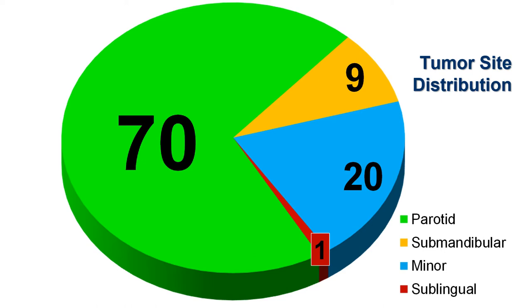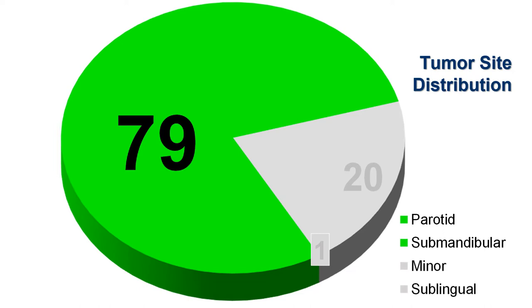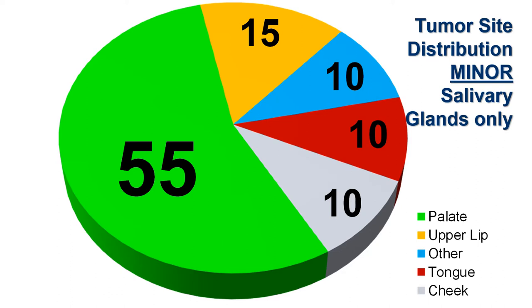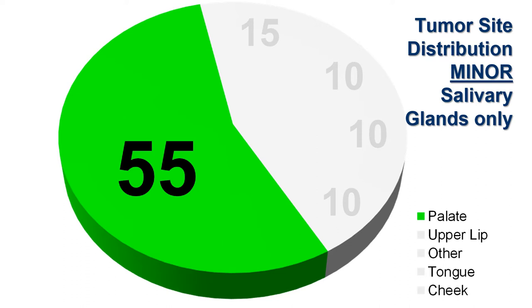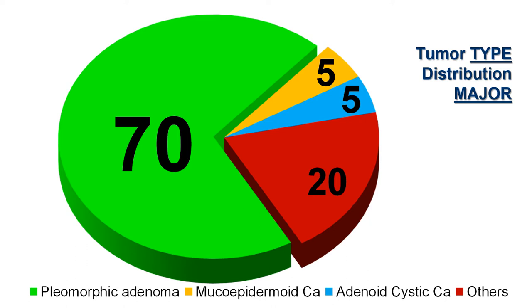When considering salivary gland lesions, it's useful to think about tumor site distribution. Nearly 80 percent of all lesions are accounted for in the major salivary glands between the parotid and submandibular. For the minor salivary glands, just over 55 percent occurs within the palate, demonstrating a clear site distribution predilection.